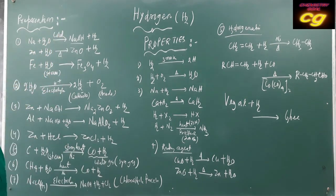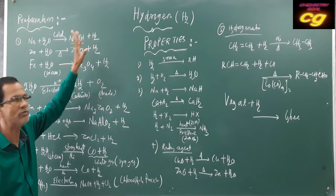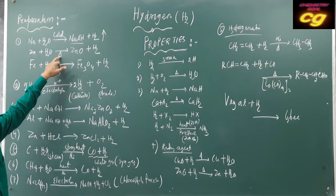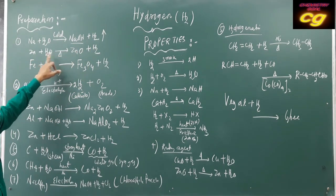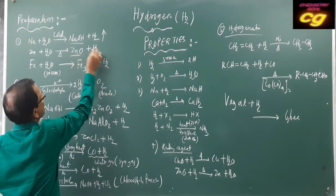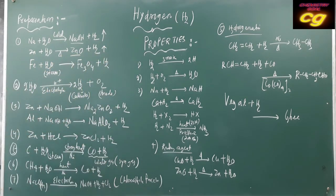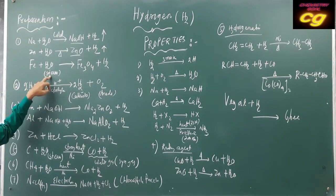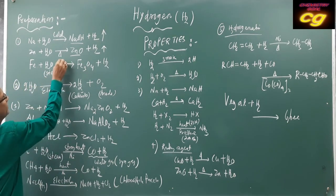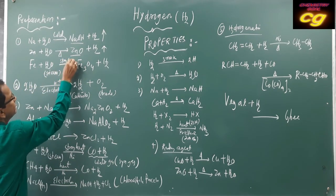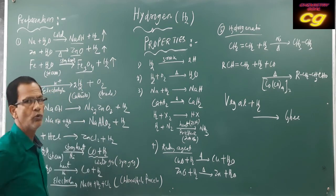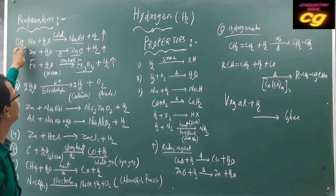Heating is not required for sodium — at room temperature it reacts, forming sodium hydroxide and hydrogen gas. Similarly, zinc with water requires heating; at room temperature it does not react, but on heating it forms zinc oxide and hydrogen gas. Iron, compared to sodium and zinc, is less reactive — that is why it reacts with steam, not direct water, with strong heating, forming ferrous or ferric oxide and hydrogen.